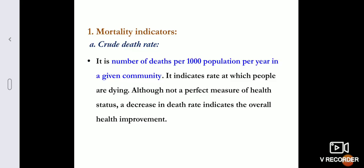Let us see the first one, that is mortality indicators. Mortality means death, while morbidity means disease. Mortality indicators include crude death rate, which is the number of deaths per thousand population per year in a given community. It indicates the rate at which people are dying. Though crude death rate is not a perfect measure of health status, it can definitely indicate overall health improvement in that particular community or nation.